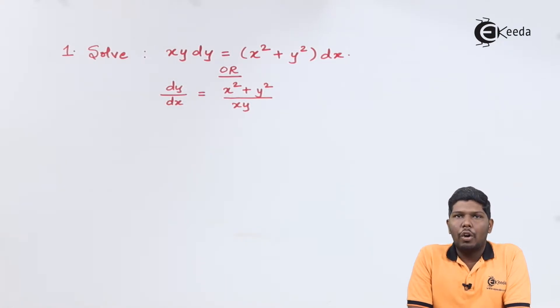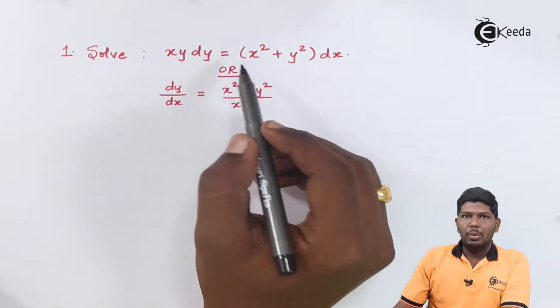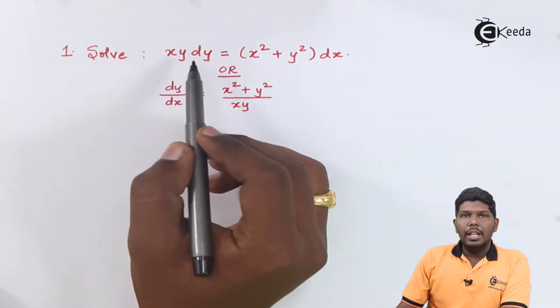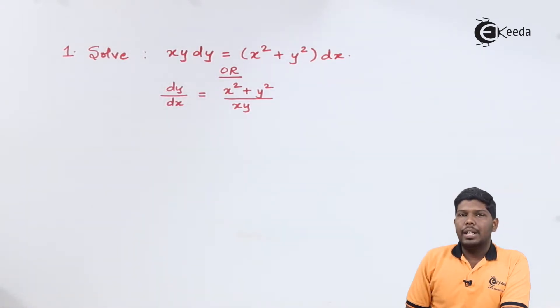For example, in problem number one if you see we have xy dy = (x² + y²) dx. If you see each term about xy, the power is linear and if I add those two powers I will get answer two.